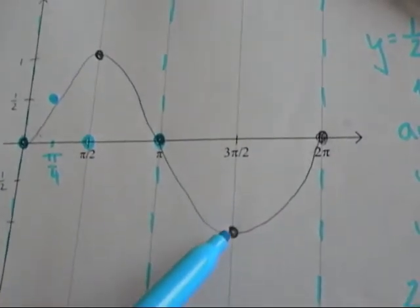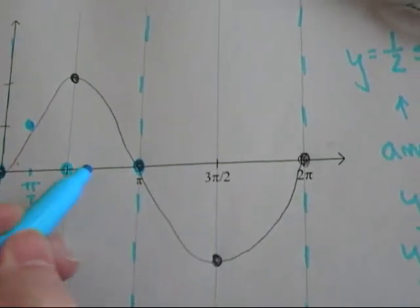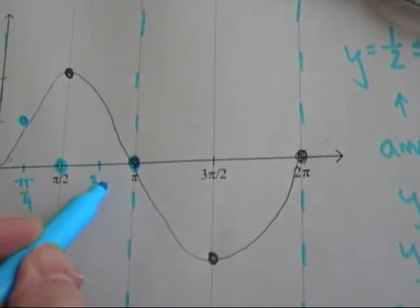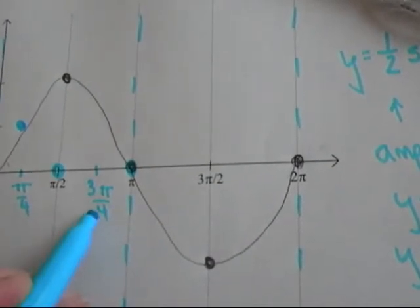My minimum is my fourth point. My fourth point has to go right in between my third and fifth point. So that's at three pi over four. But my minimum again is now at negative one half.